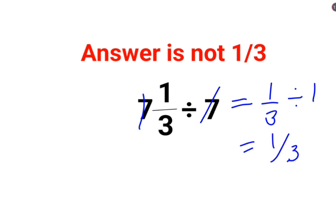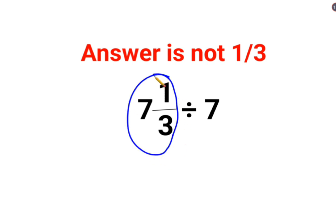The reason for that is please understand here we did not have 7 multiplied by 1/3. This is a mixed fraction. Now whenever you want to do division, your first job is to convert the entire mixed fraction into an improper fraction.